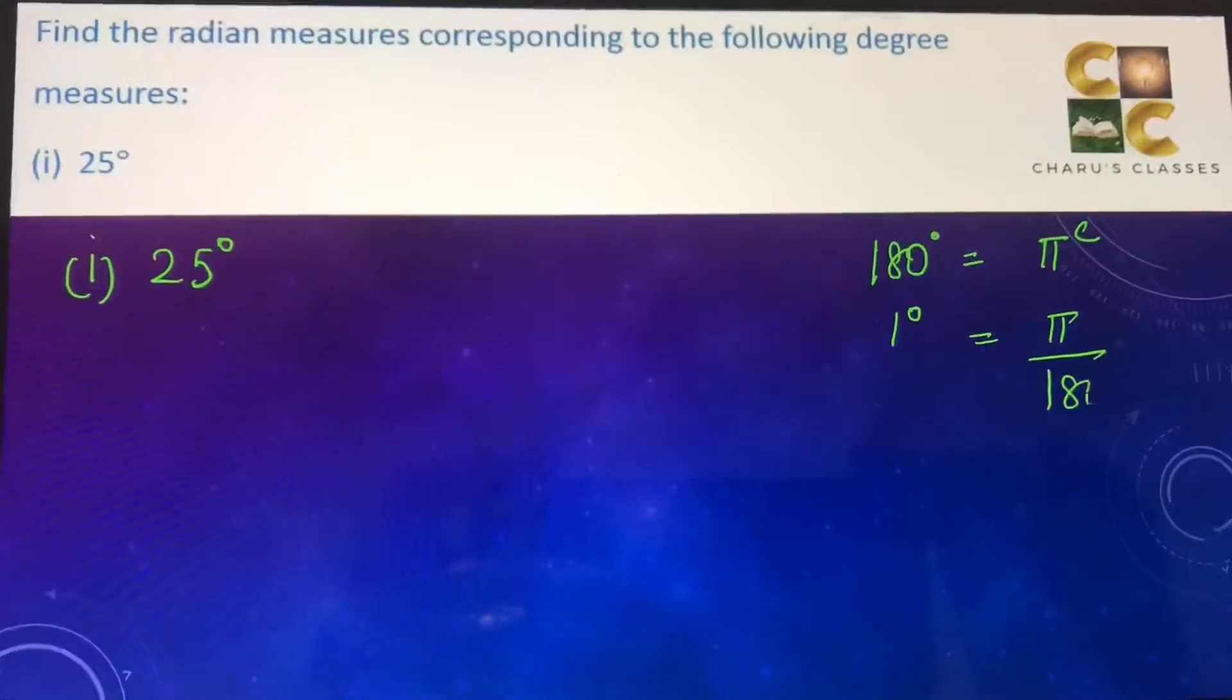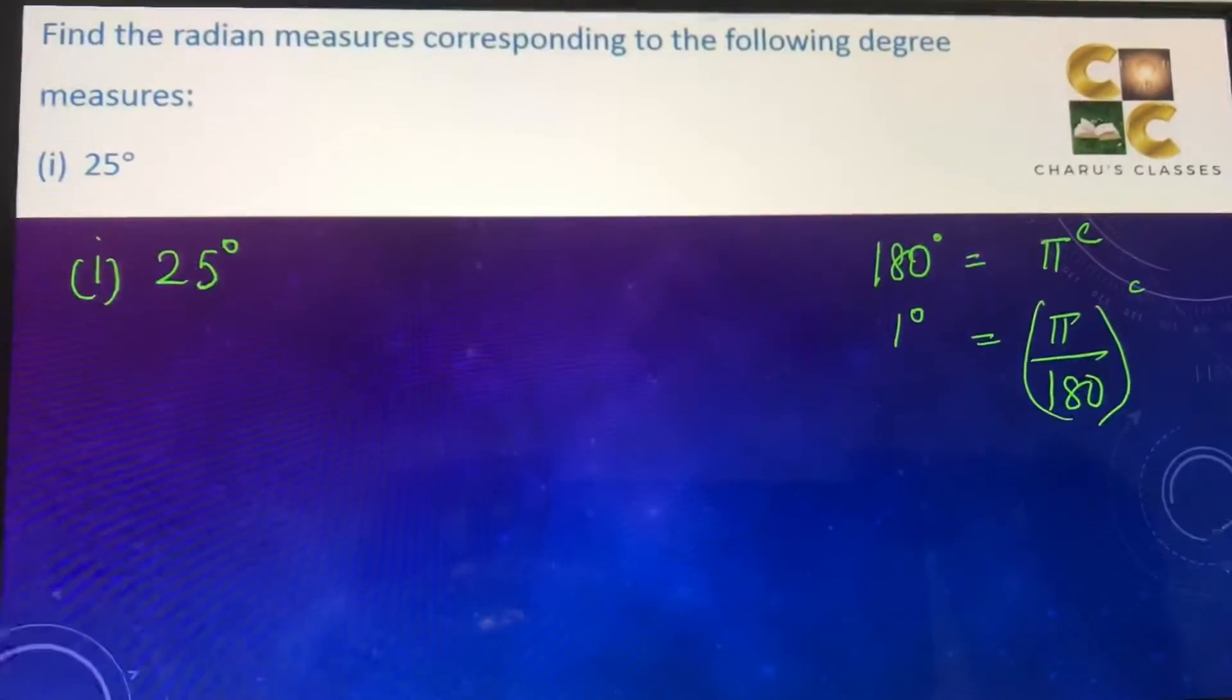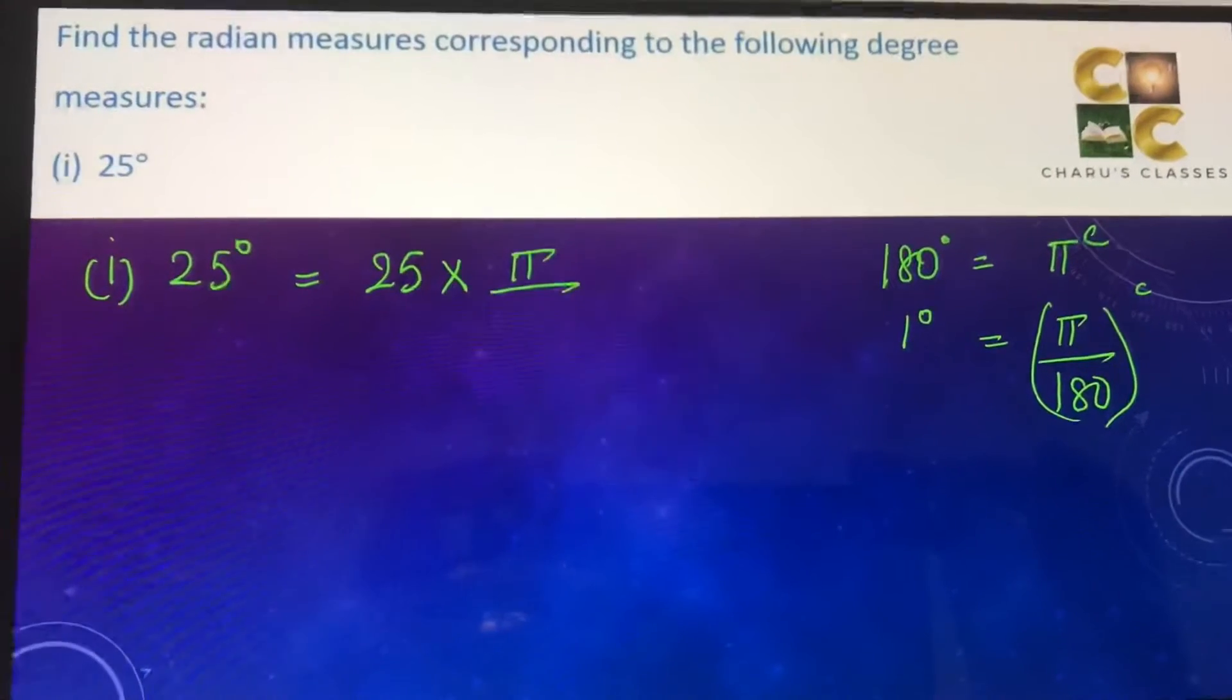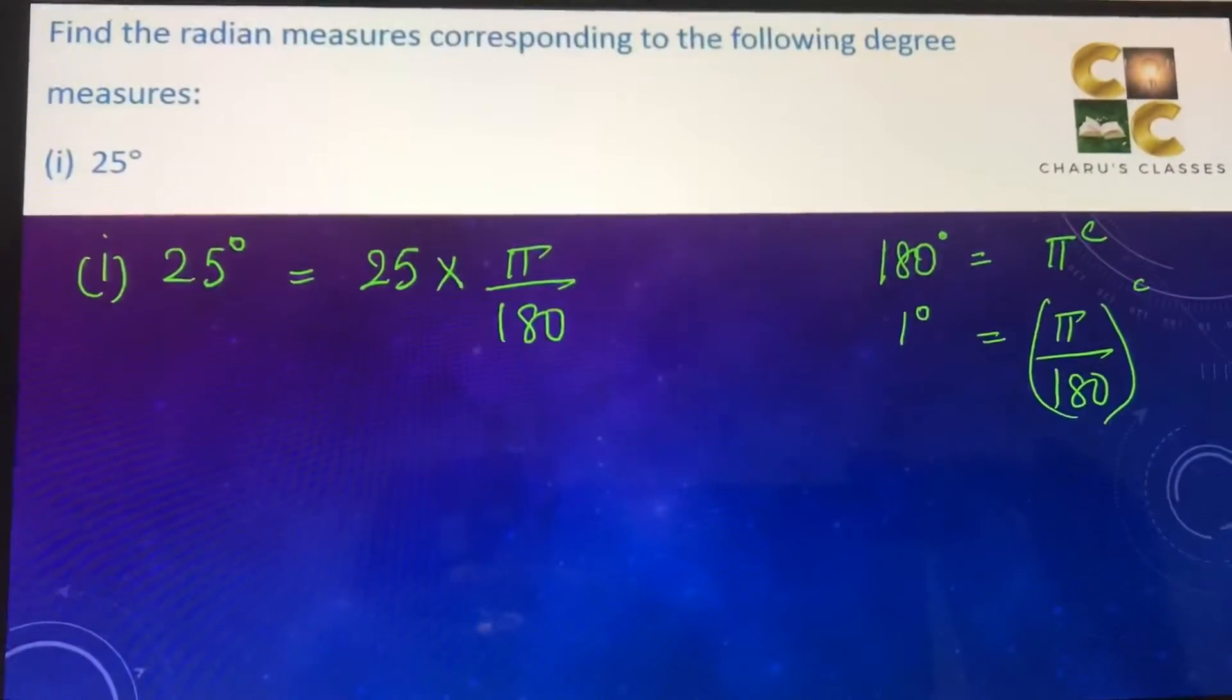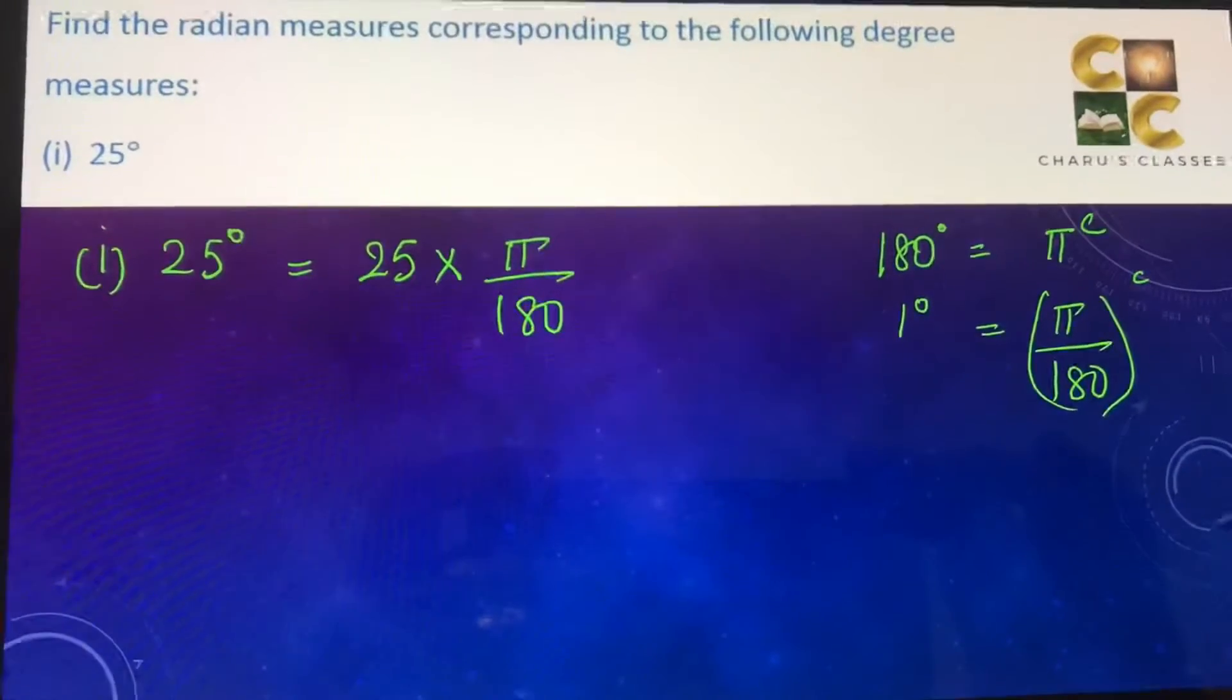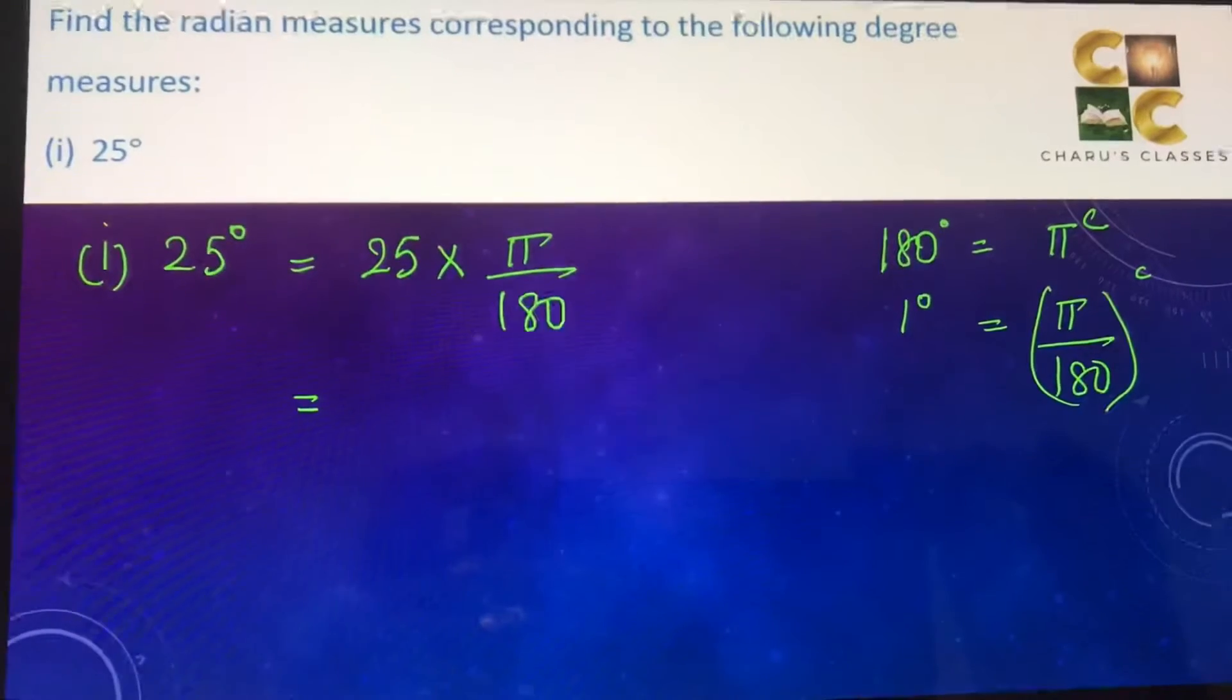So for 25 degrees we can write it as 25 into π by 180 radians. Whenever we have to convert degree to radians we multiply it by π by 180. This 25 and 180 can cancel with 5, so 5 fives are 25 and 36.